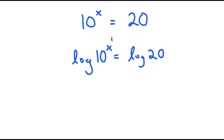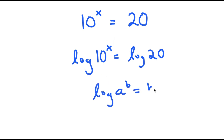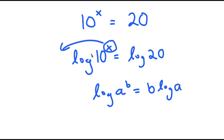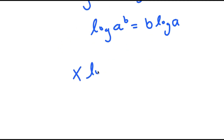From here, if I have something in the form log of a to the power of b, this is equal to b times log a. So for log of 10 to the power of x, I can move x to the front, and I get x times log 10 is equal to log 20.